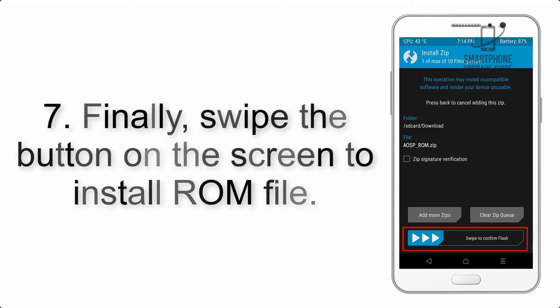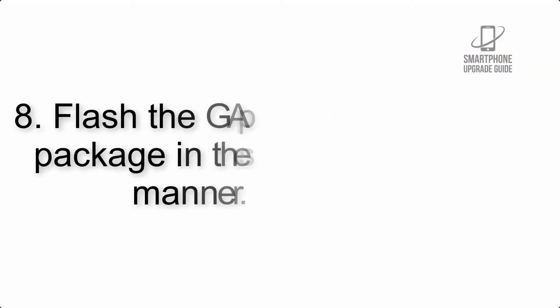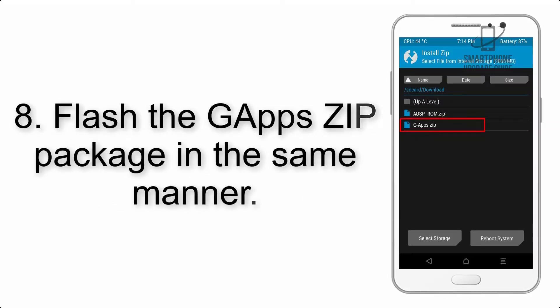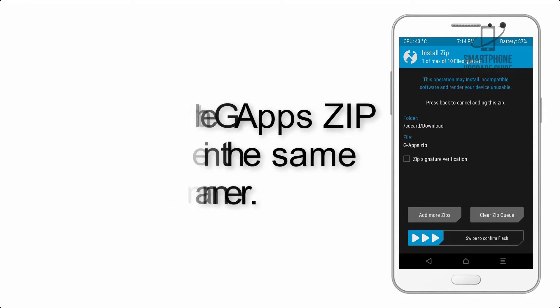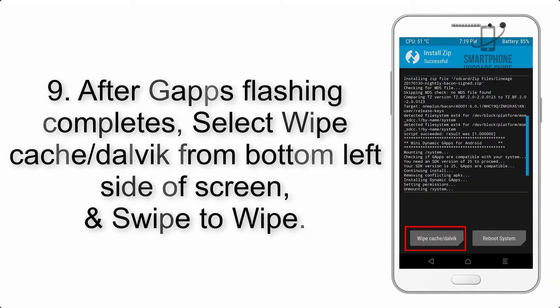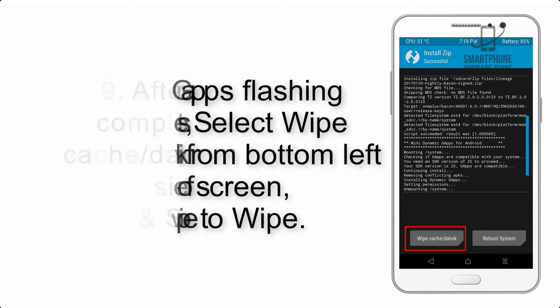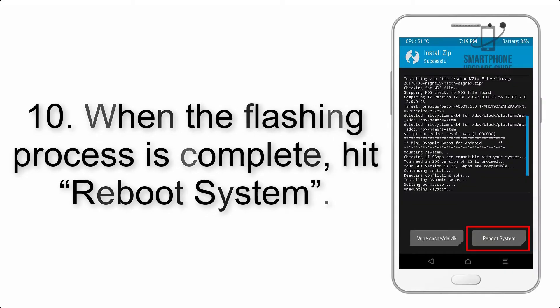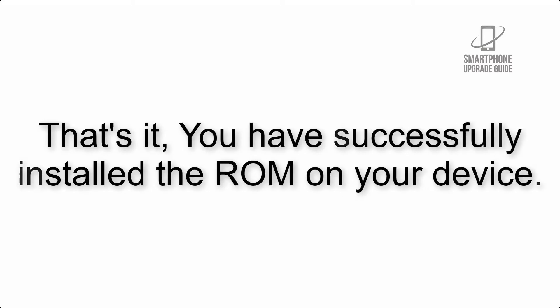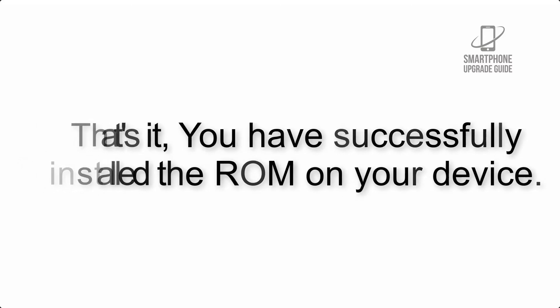Step 7: Swipe the button on screen to install the ROM file. Step 8: Flash the G apps zip package in the same manner. Step 9: After G apps flashing completes, select Wipe Cache and Dalvik from the bottom left side of the screen and swipe to wipe. Step 10: When the flashing process is complete, hit Reboot System. That's it — you have successfully installed the ROM on your device.